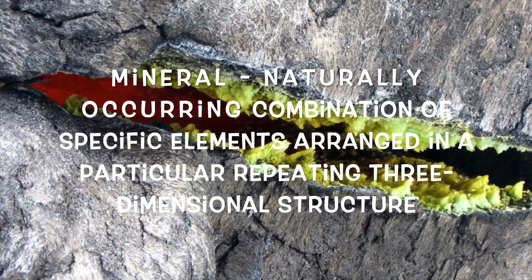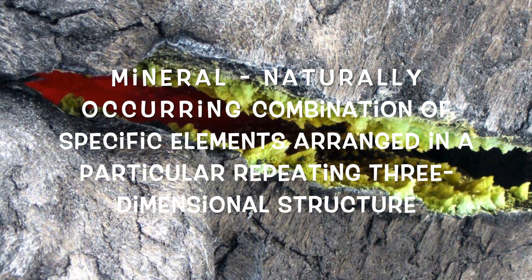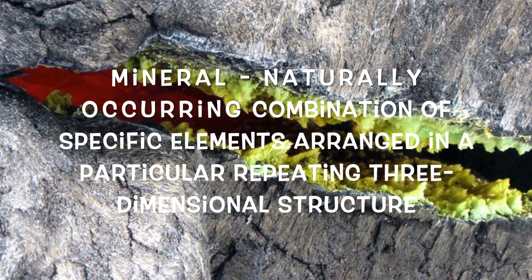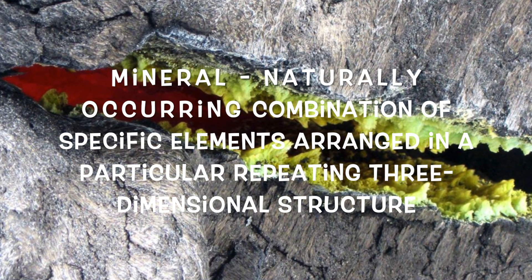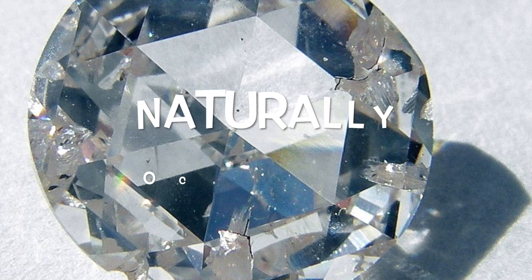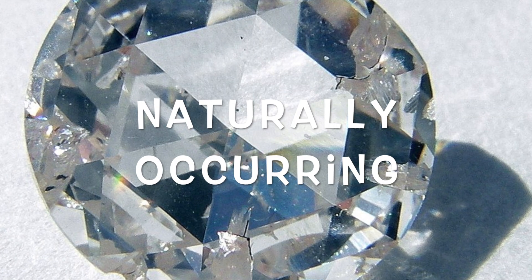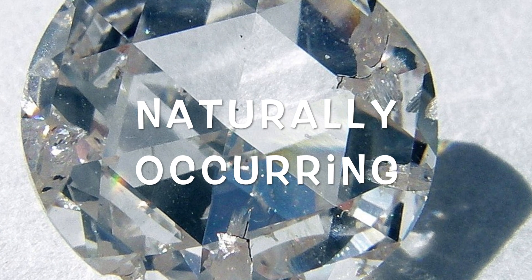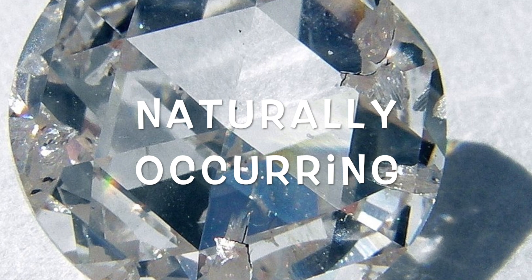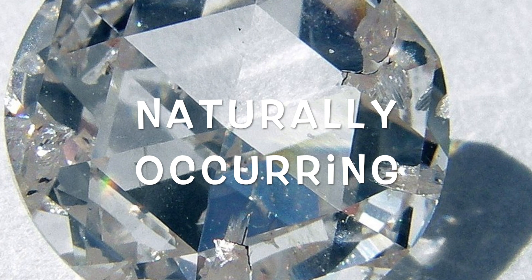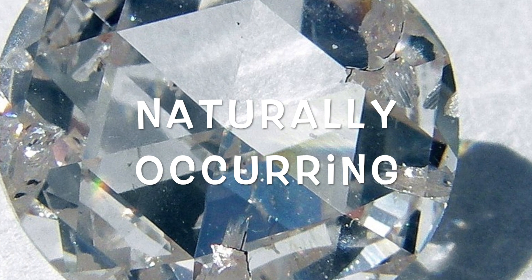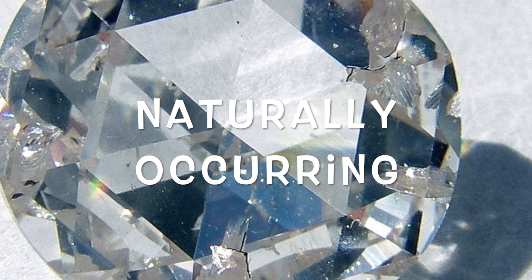A mineral is defined as a naturally occurring combination of specific elements arranged in a particular repeating three-dimensional solid structure. Naturally occurring implies that minerals are not artificially made, although many naturally occurring minerals such as diamonds are also made in laboratories — that doesn't disqualify them from being minerals.